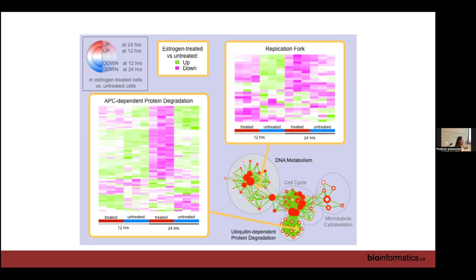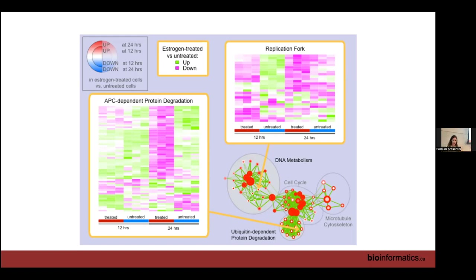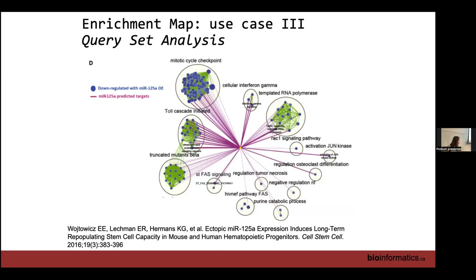Another feature is leading edge analysis. When you ran GSEA, there was a column called 'core enrichment' associated with each pathway. As the enrichment score is calculated, it reaches a peak — that's the leading edge. Any genes to the left of that peak are the important genes driving the enrichment. When you click on an individual node within Enrichment Map it will highlight your leading edge genes — not necessarily more important, but interesting to look at as specific drivers of those pathways.